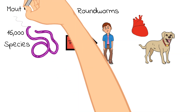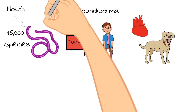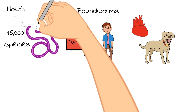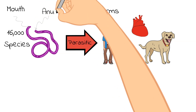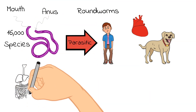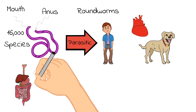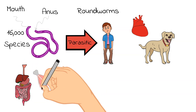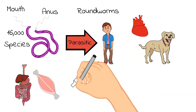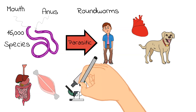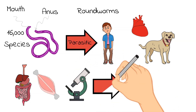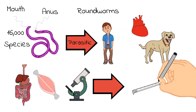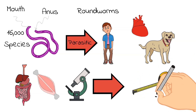These roundworms do not have segments on their bodies, but they do have a mouth at one end and their anus is on the other end. Roundworms have intestines throughout their hollow bodies, and they have different layers of muscles as well. They range in size from only being able to be seen under a microscope to being almost 20 feet long.